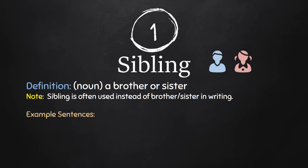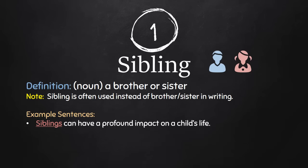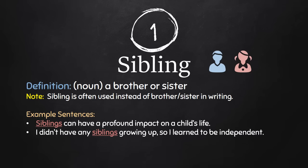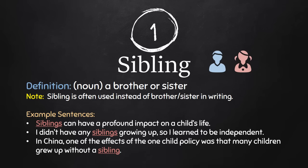It's also used that way in speech. Let's take a look at some example sentences. First: siblings can have a profound impact on a child's life — profound means big. I didn't have any siblings growing up, so I learned to be independent. This might be a sentence you say during an IELTS speaking interview. And last: in China, one of the effects of the one child policy was that many children grew up without a sibling.